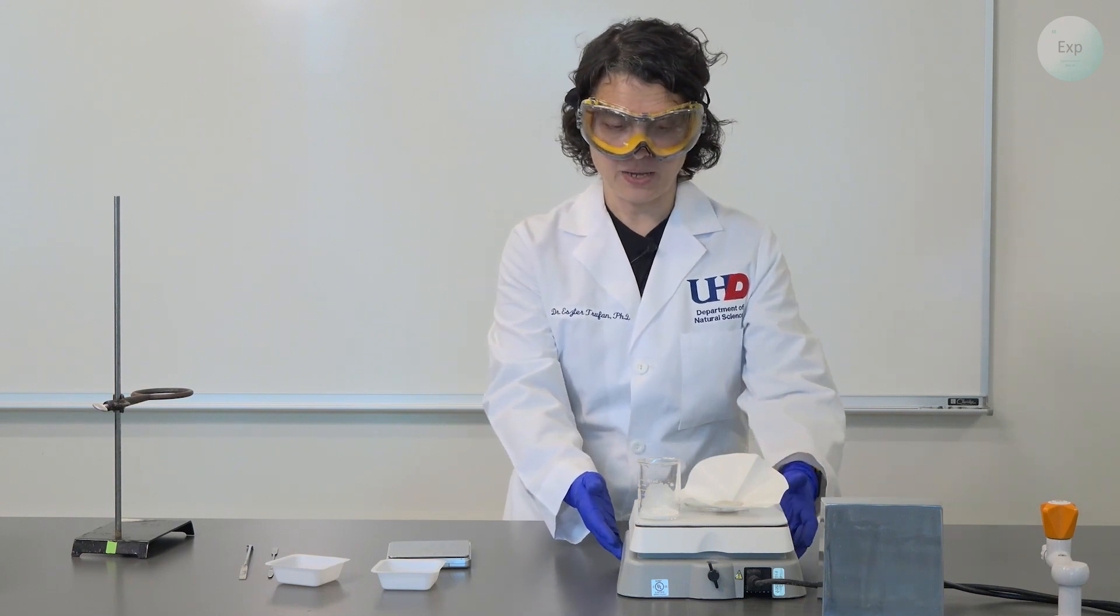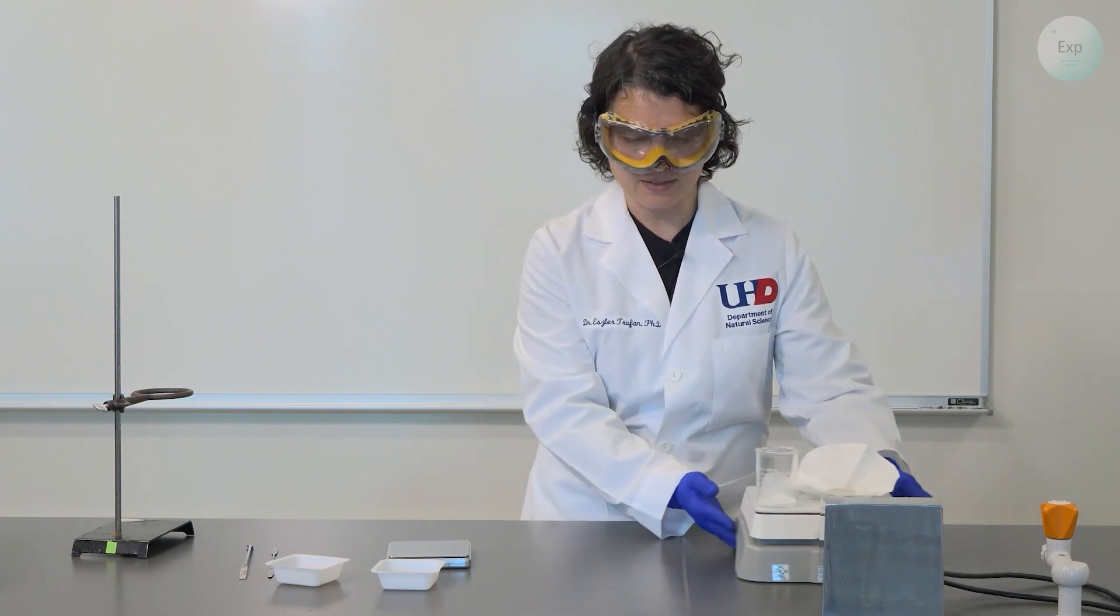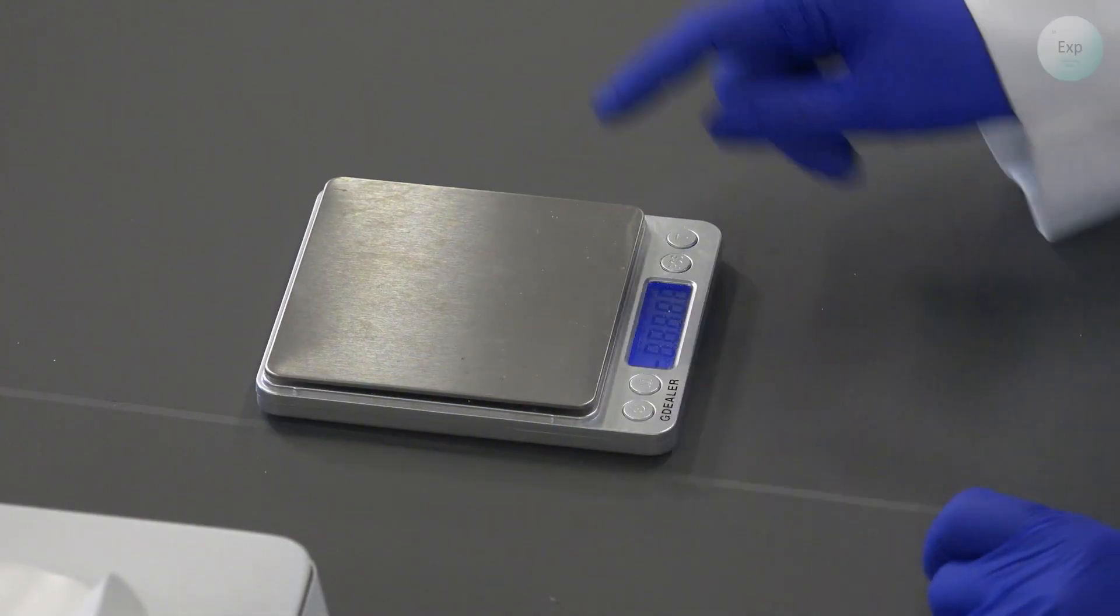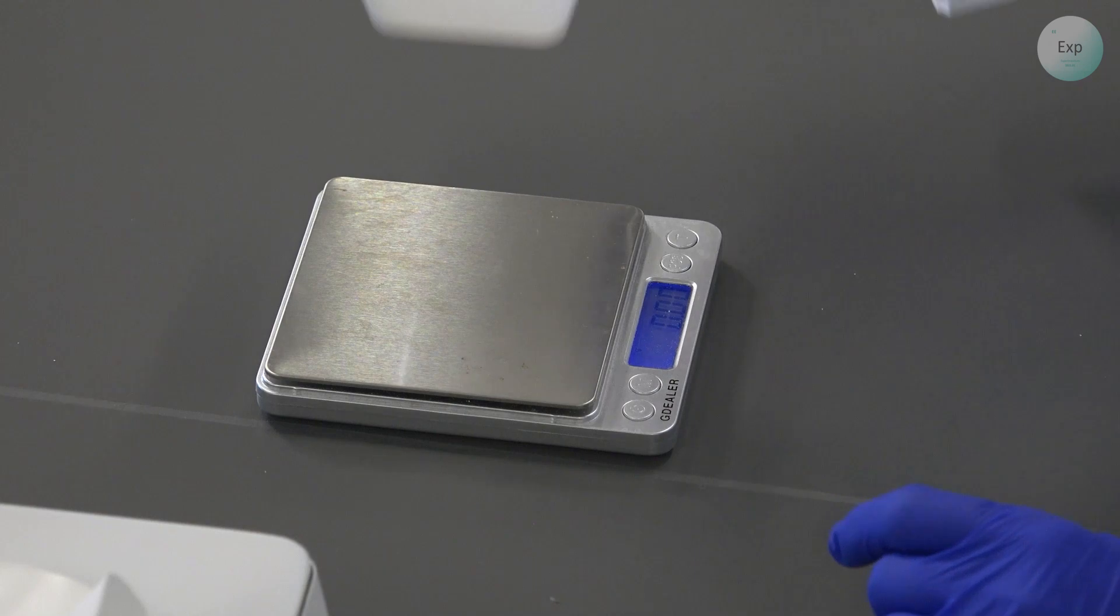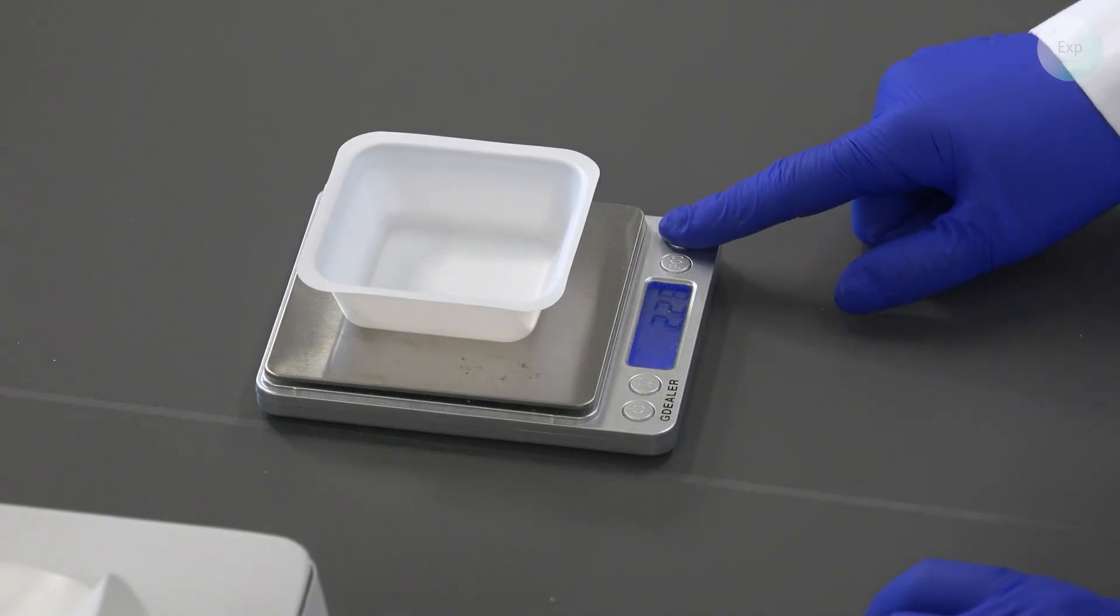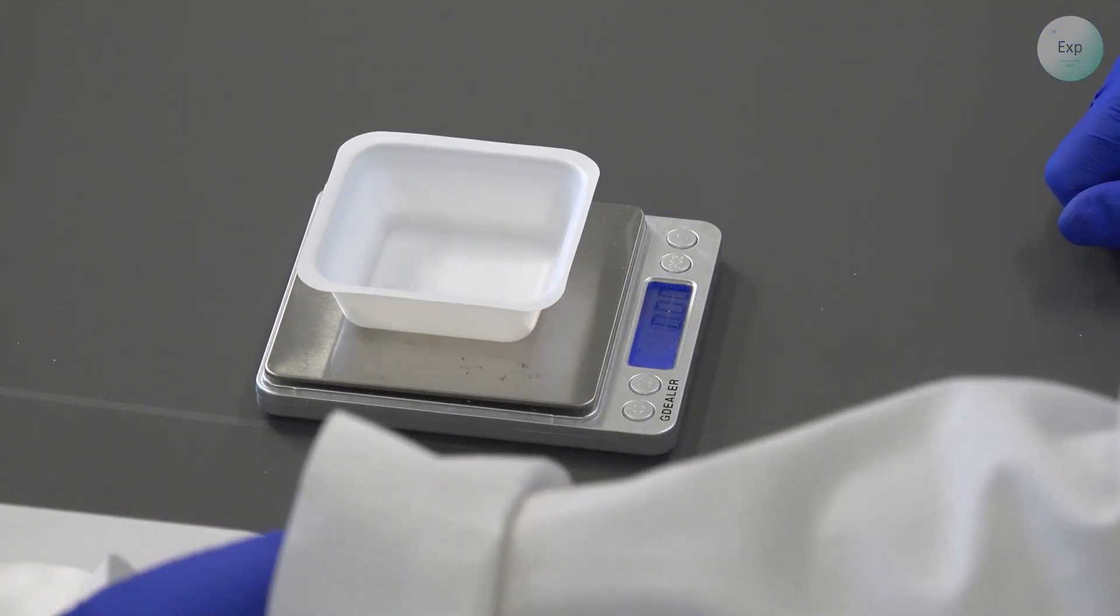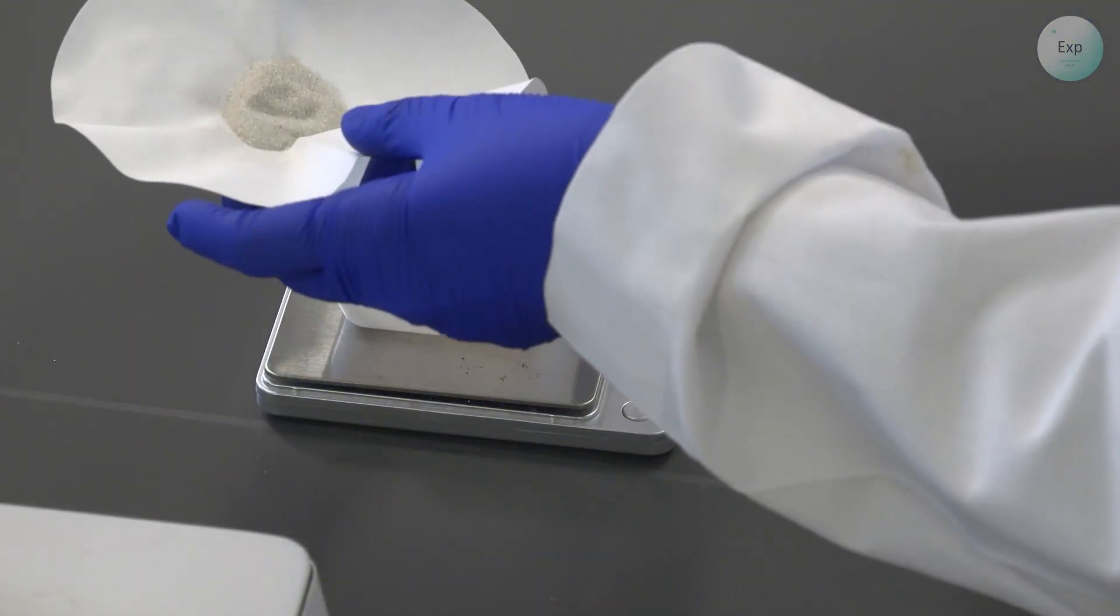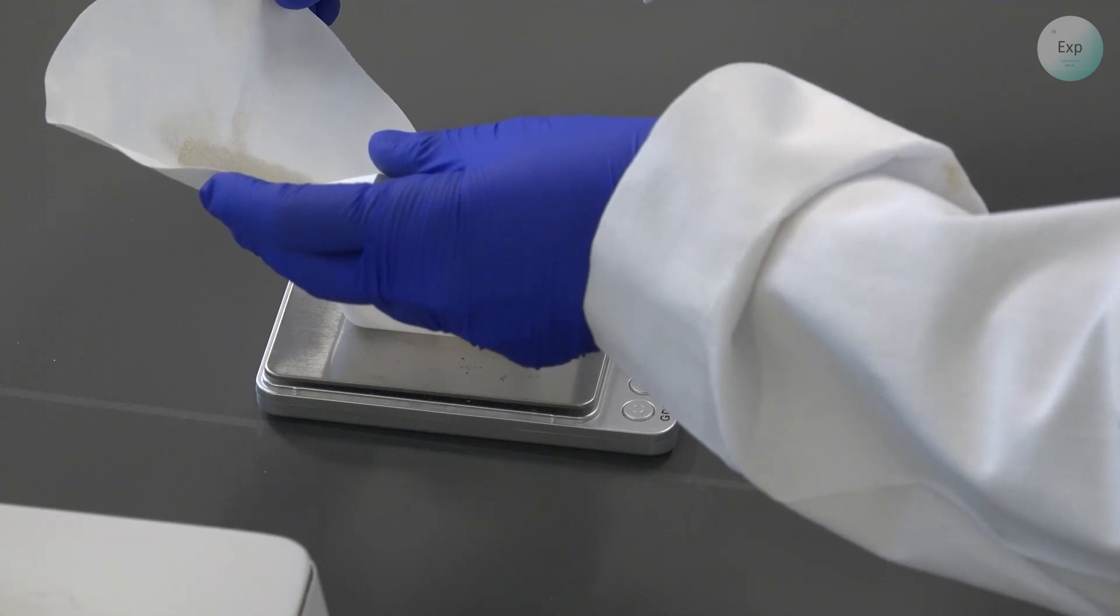I will turn off my hot plate and set it aside, bring in my scale, turn it on, bring in a clean weighing boat, tare it, and then because paper doesn't get very hot, I can pick it up from here and transfer it onto the weighing boat.